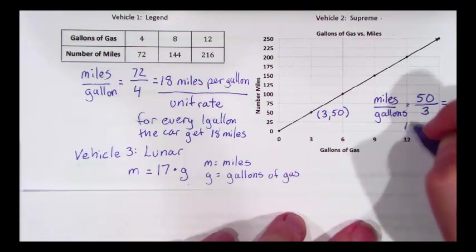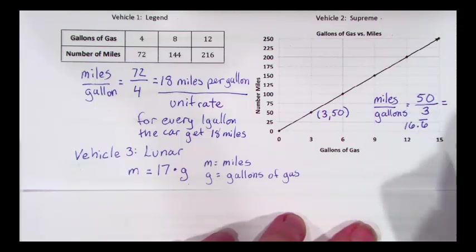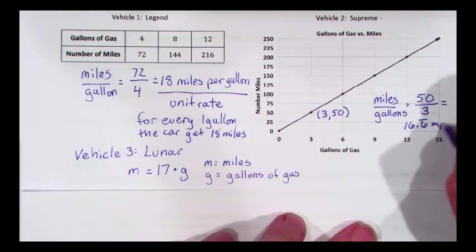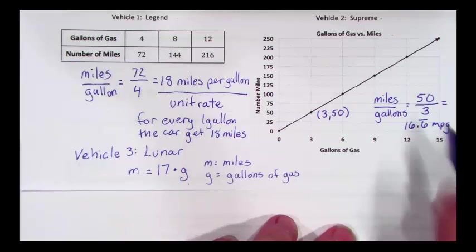That gives us sixteen point six repeating miles per gallon. That is our unit rate for the second car.